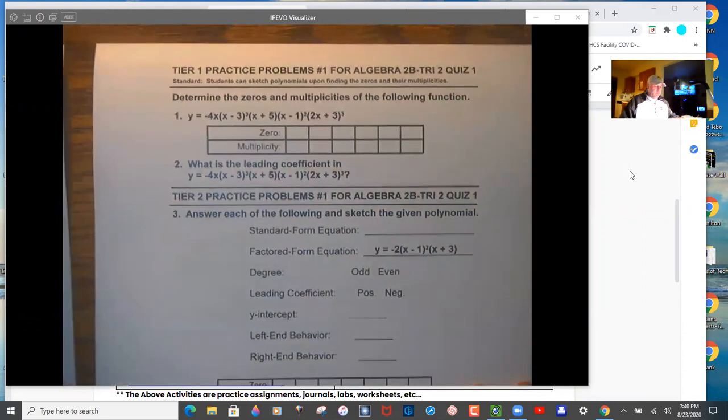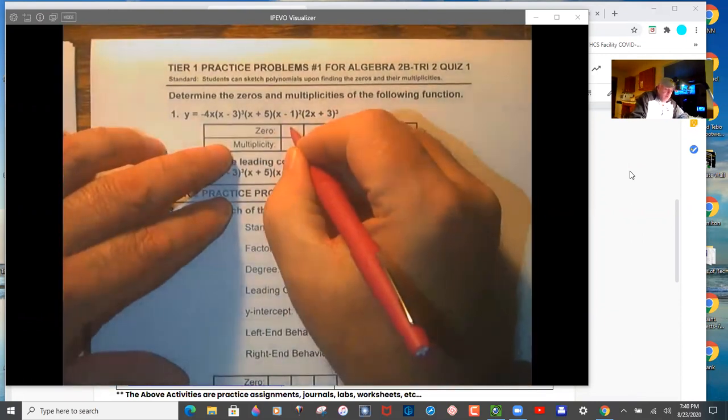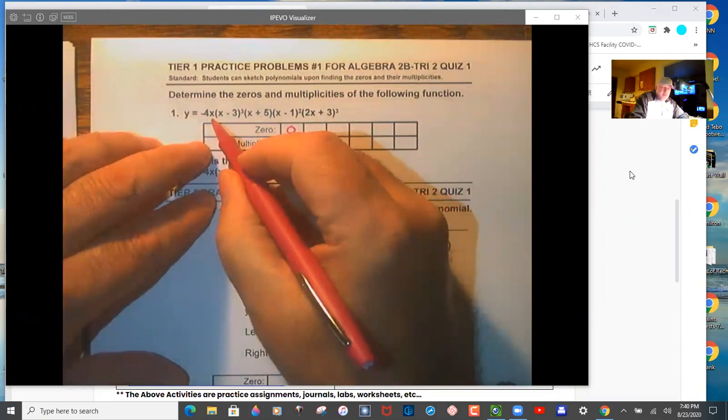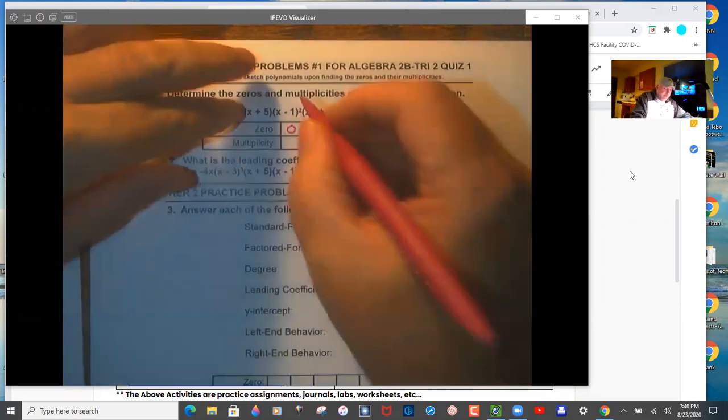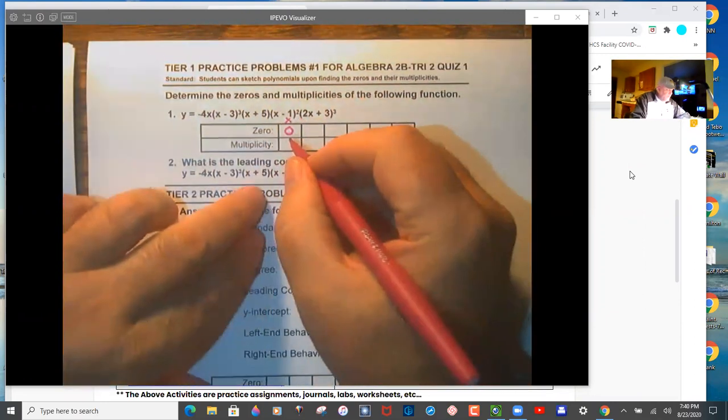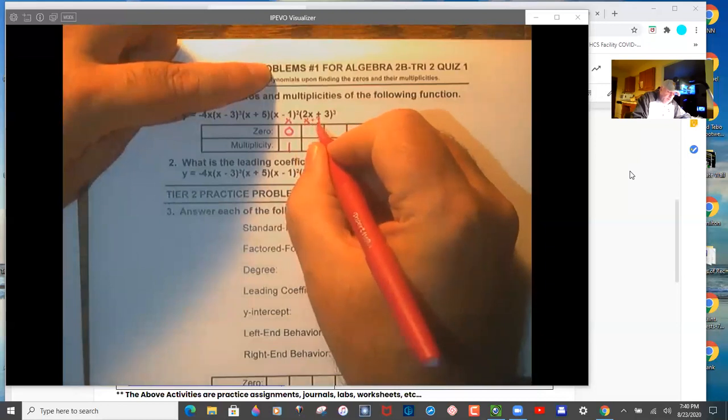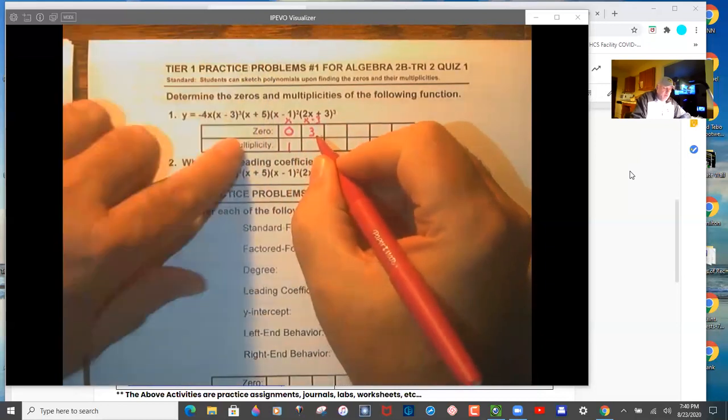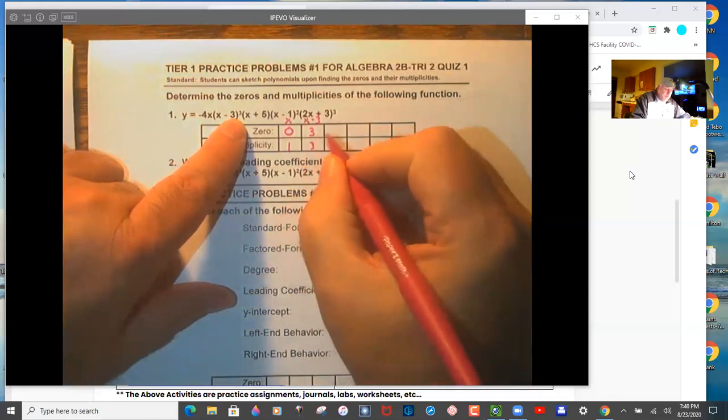This first tier one problem, you want to list the zeros based on the factors. A factor of x has a zero root, I'll write that above it, and its multiplicity is one. Then we come upon x minus three, so its zero is three and its multiplicity is three, the power is three.